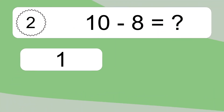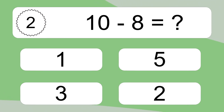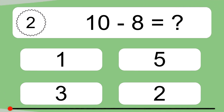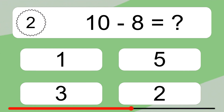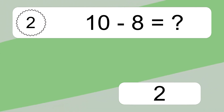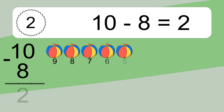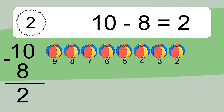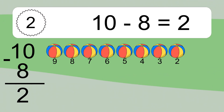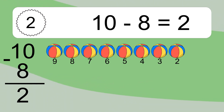10 minus 8 equals what? 10 minus 8 equals 2. Let's count it: 9, 8, 7, 6, 5, 4, 3, 2.